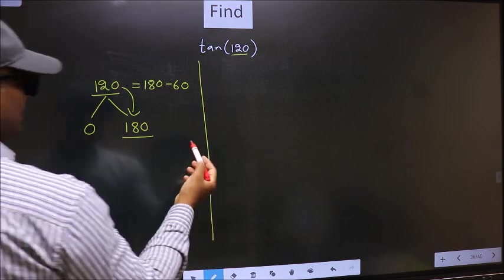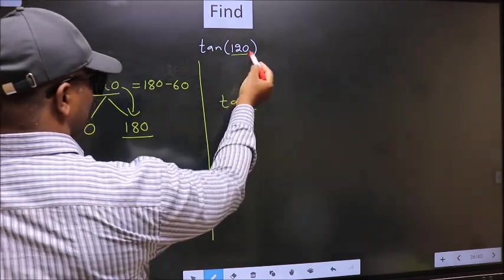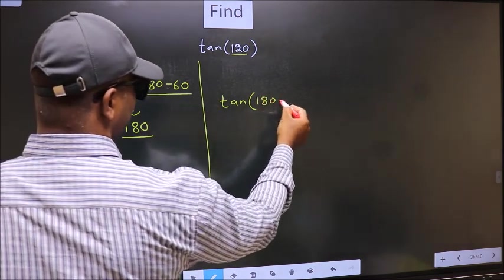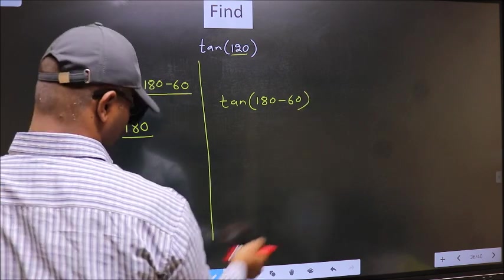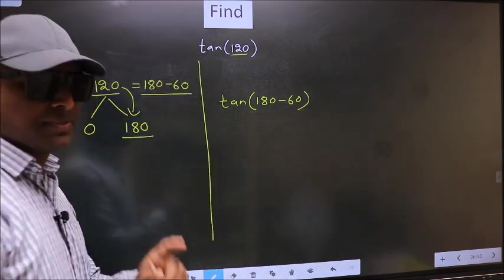So this will become tan. In place of this, we write this: 180-60. This is your step 1.